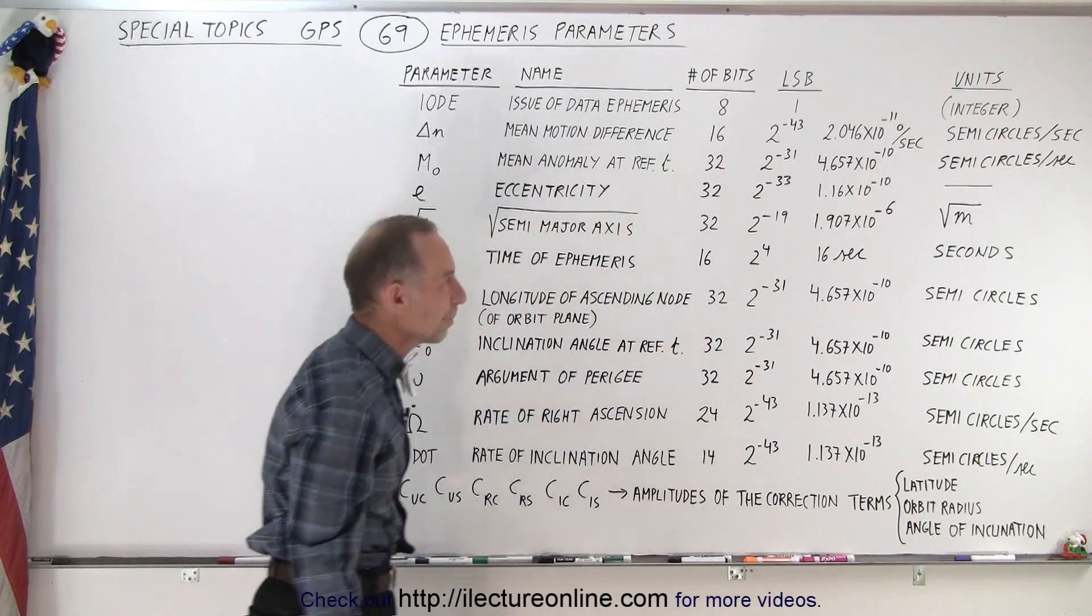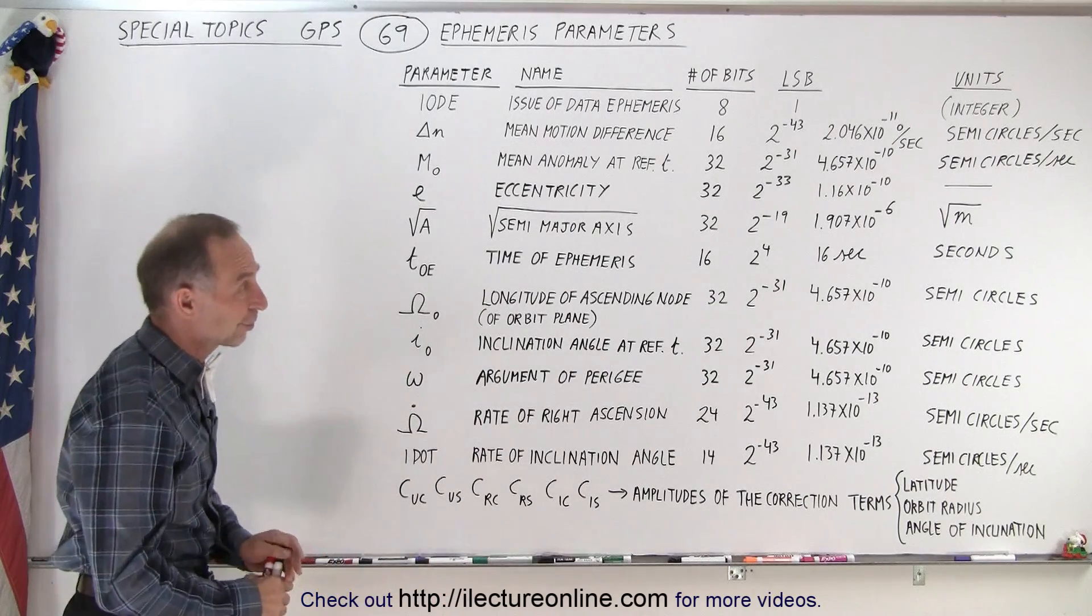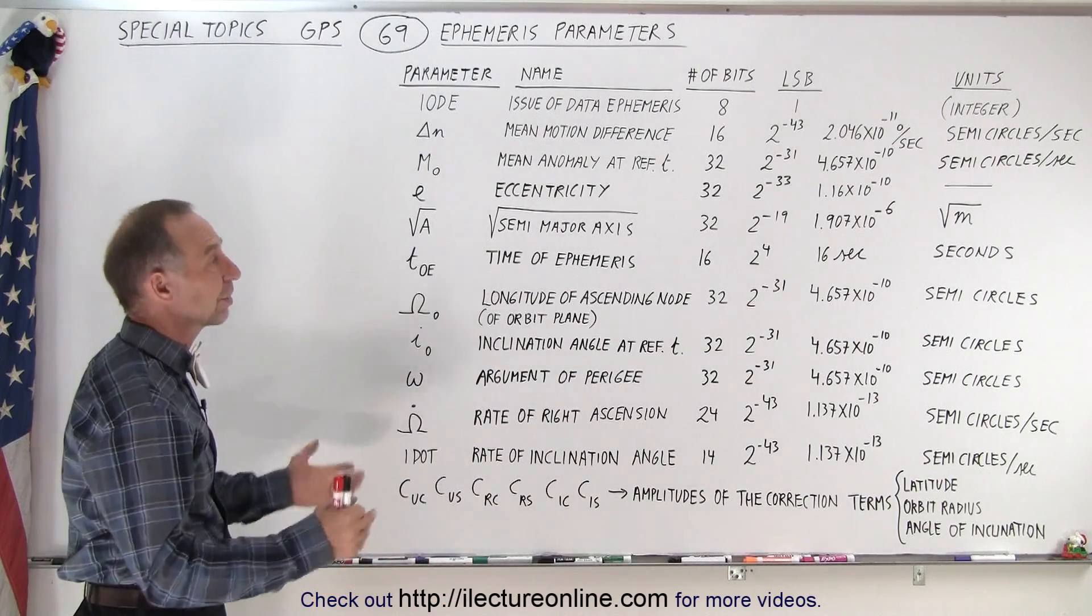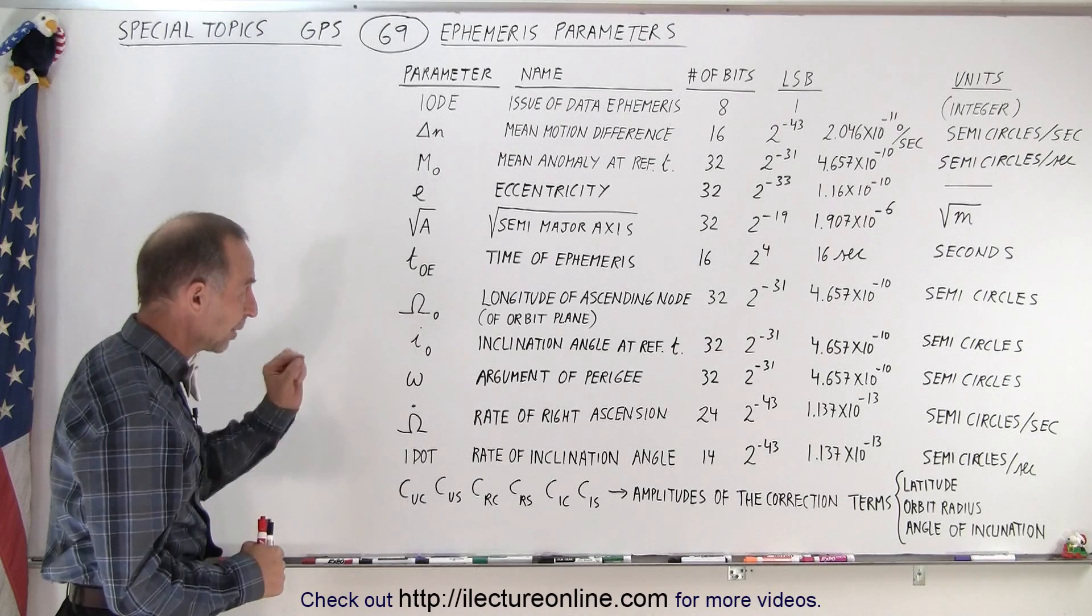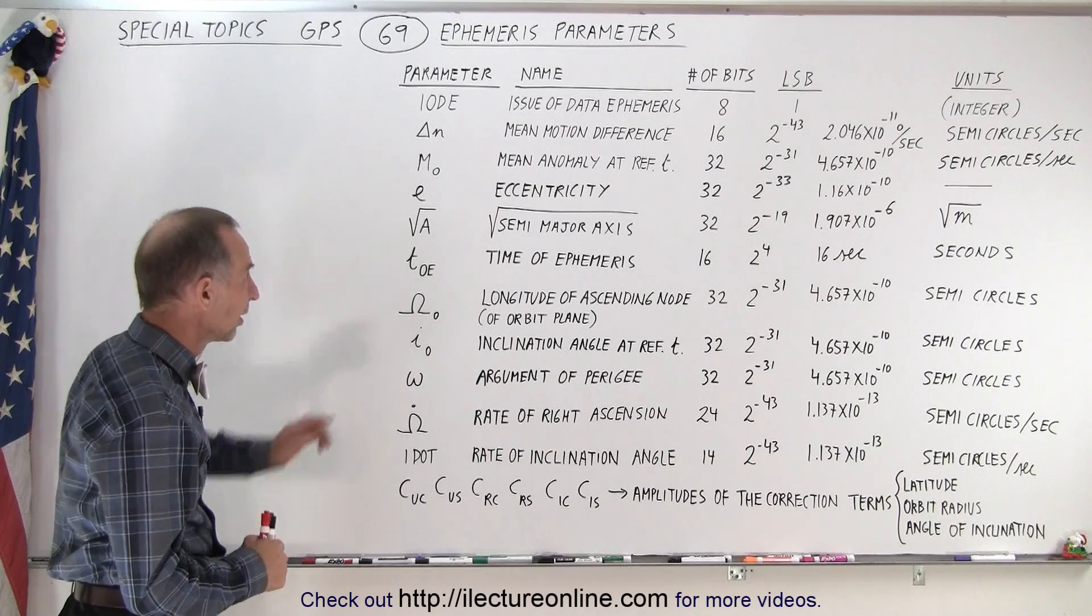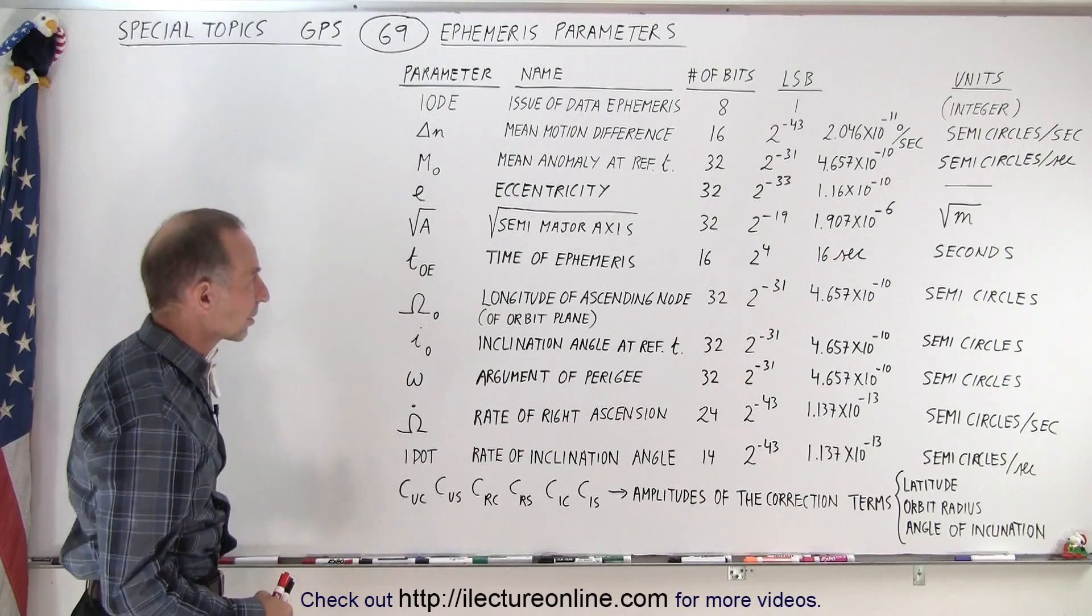That makes a lot of sense because the semi-major axis in meters is 150 billion meters. So we need a lot of bits and we can go down to the nearest 1 times 10 to the minus 6 square root meters. That would be one millionth of the square root of a meter. We do have very small precise changes in the semi-major axis.